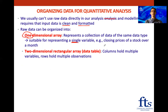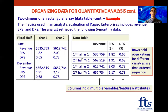For a two-dimensional rectangular array, also called a data table, columns hold multiple variables and rows hold multiple observations. For example, looking at metrics used in an analyst's evaluation of Gagiso Enterprises — the analyst is looking at revenue, earnings per share, and dividends per share, though of course many other metrics like cashflow, debt, equity, and assets would also be used.